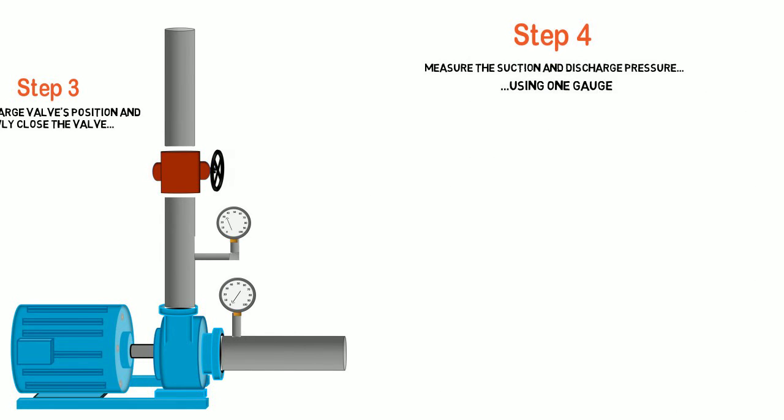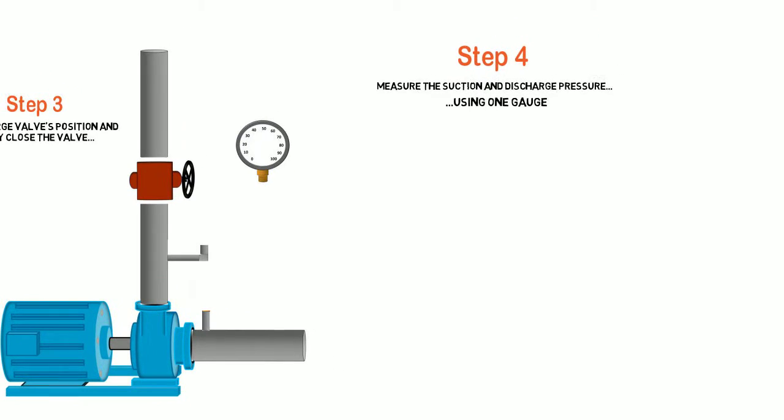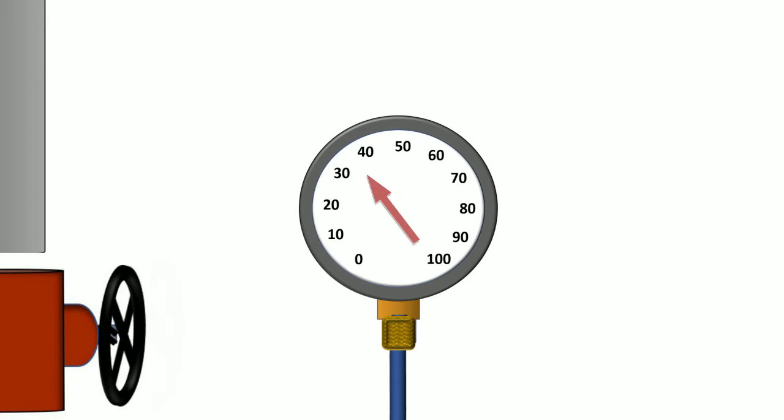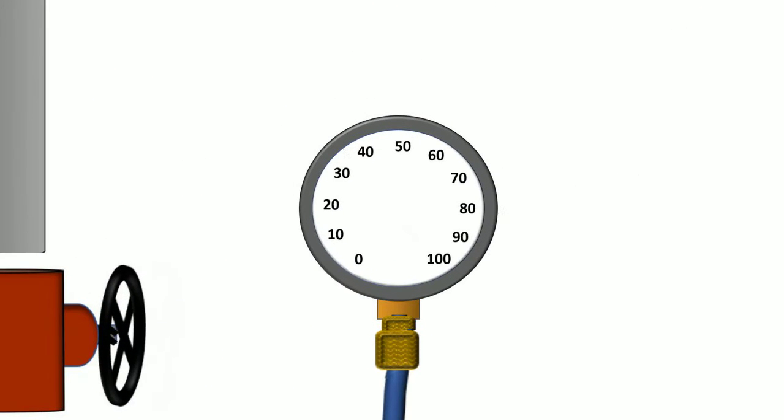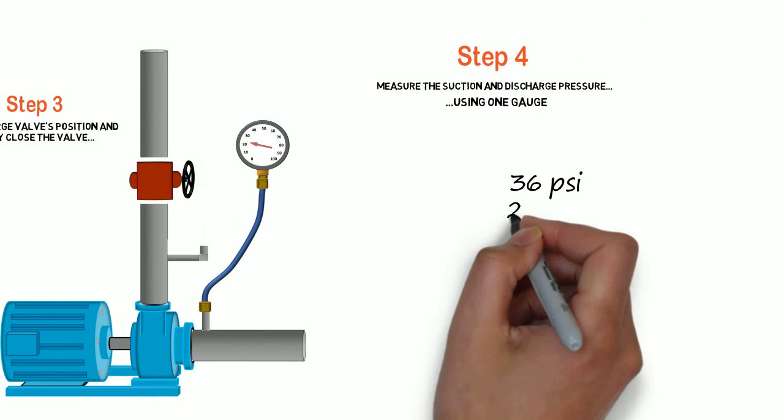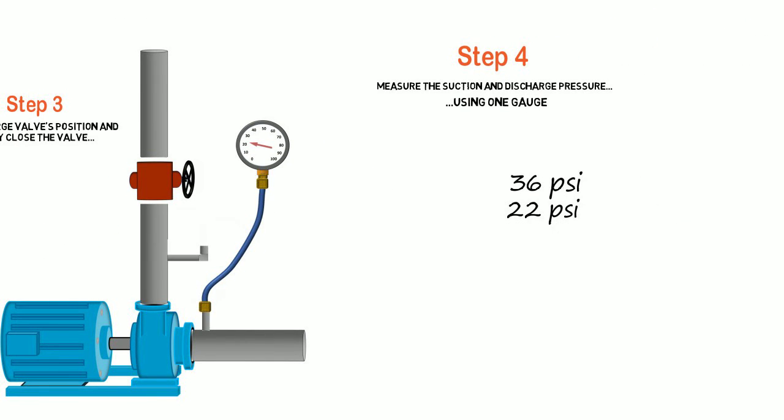Measure the suction and discharge pressures using one gauge, not the gauges that have been bouncing around on that pump for the past decade. Take those off, use one gauge, use a piece of hose, hold the gauge at the same height. First, the discharge. In this example, we've got about 36 psi. Write it down. Now, move the hose over to the suction. Record it. We've got about 22 psi. Write it down.